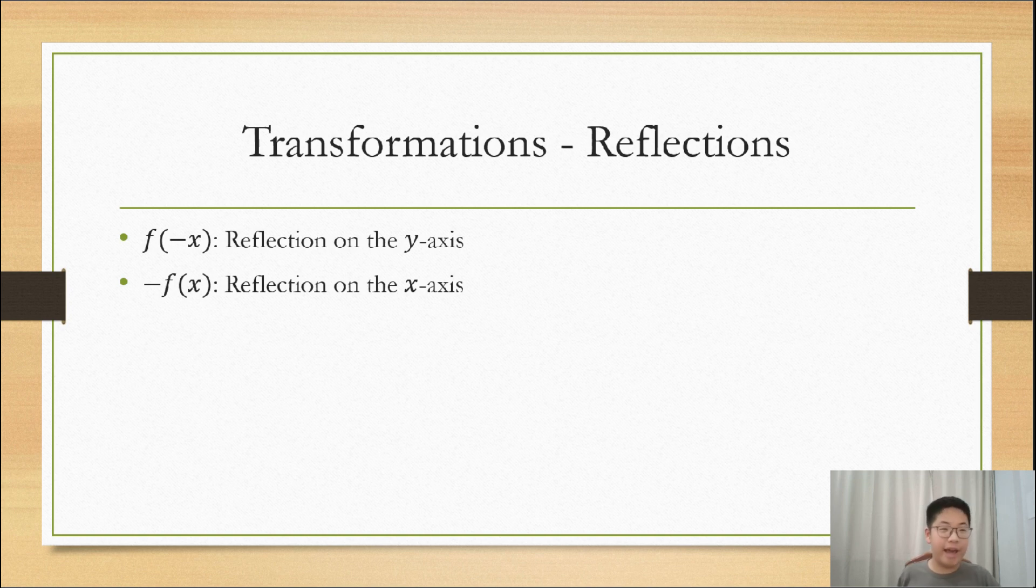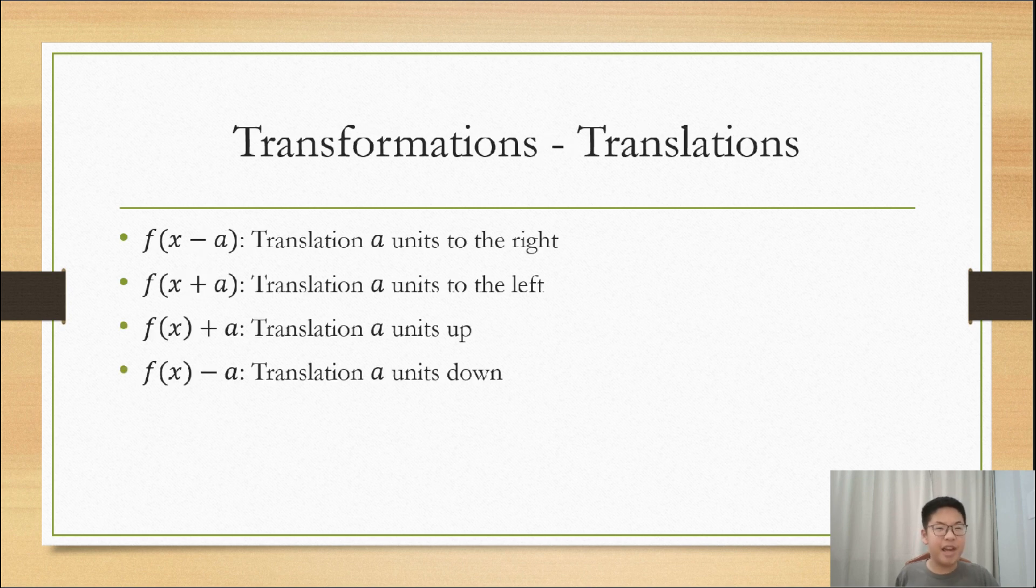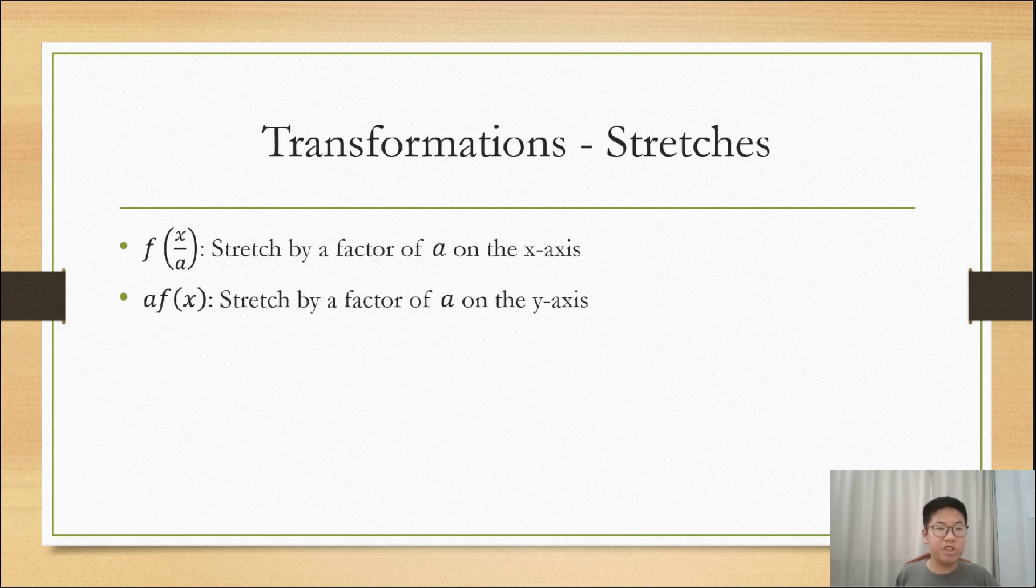f negative x is the reflection on the y-axis, and negative fx is the reflection on the x-axis. Then we have the four translations: a units to the right, a units to the left, a units up, and a units down. fx on the a is a stretch by a factor of a on the x-axis, and afx is a stretch by a factor of a on the y-axis.